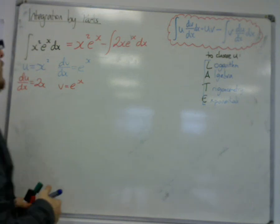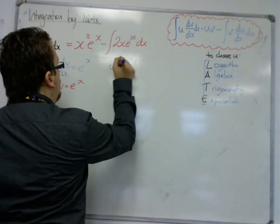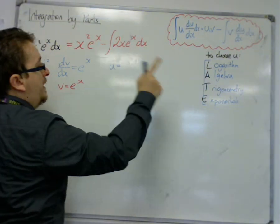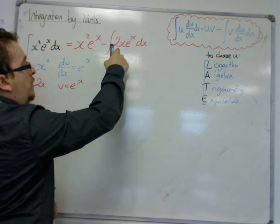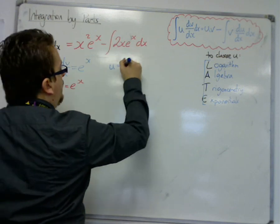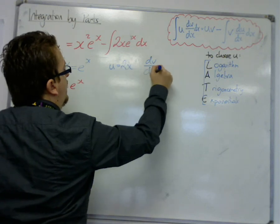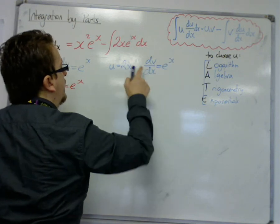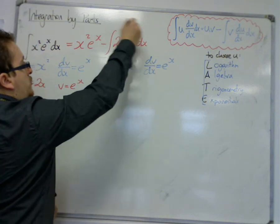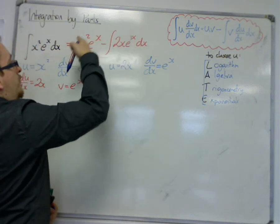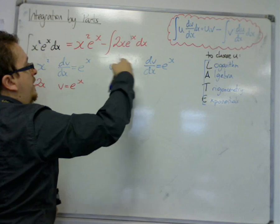So, for the second round, we've got u, this time, will have to be the 2x, because we don't have any logarithms, that's the first one to come across. So that u is 2x, and the dv by dx this time is e to the x. So we're dealing with this integral here, leave that alone for the time being, we're just going to be dealing with this.